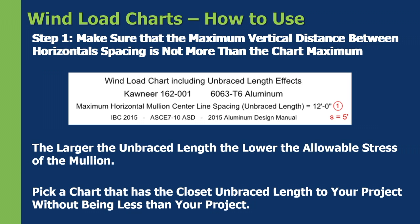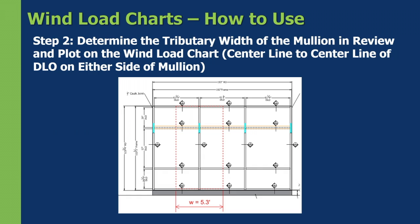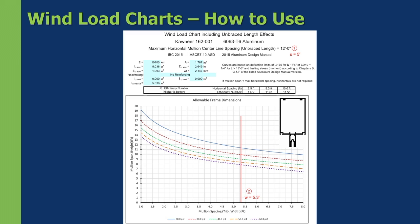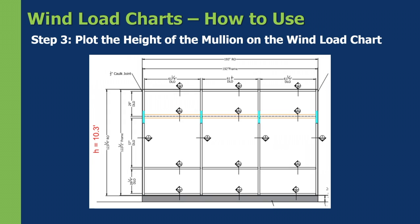Step two is to determine the tributary width of the mullion — this is the centerline of the DLO on either side of the mullion, the centerline-to-centerline distance. In this case it's 5.3 feet. We know which chart we're using from step one, and now we go to the bottom horizontal axis and plot a vertical line at our tributary width of 5.3 feet.